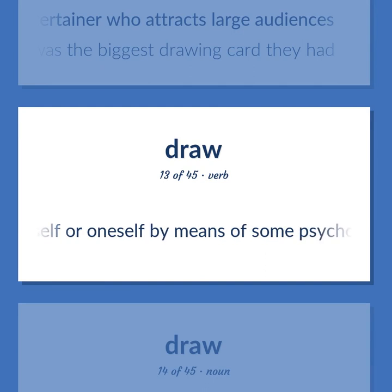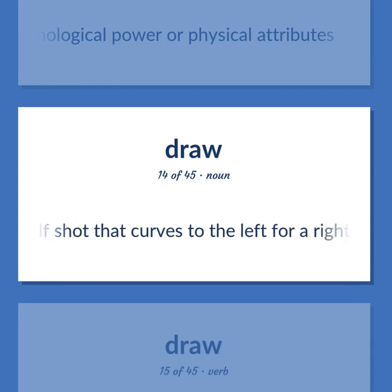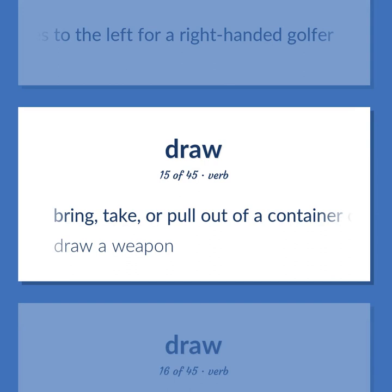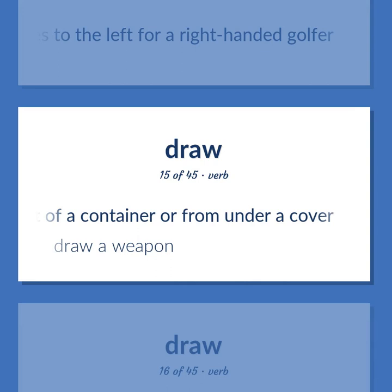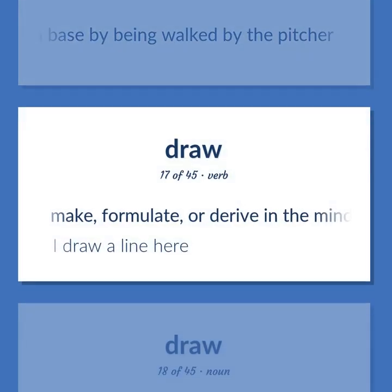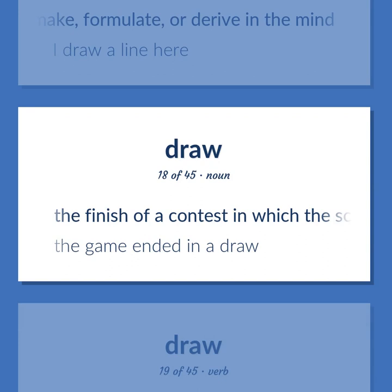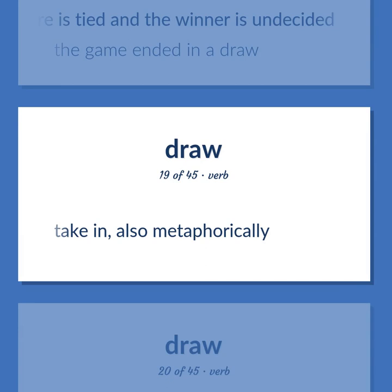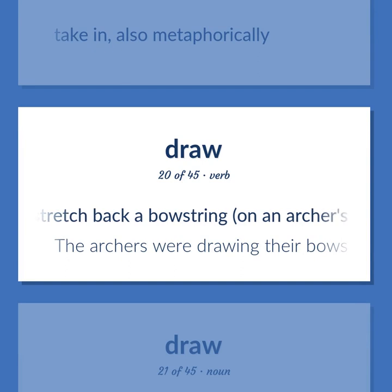A golf shot that curves to the left for a right-handed golfer. Bring, take, or pull out of a container or from under a cover. Draw a weapon. Earn or achieve a base by being walked by the pitcher. Make, formulate, or derive in the mind. I draw a line here. The finish of a contest in which the score is tied and the winner is undecided. The game ended in a draw. Take in, also metaphorically. Stretch back a bowstring on an archer's bow. The archers were drawing their bows. The act of drawing or hauling something.